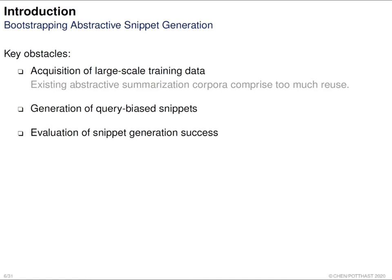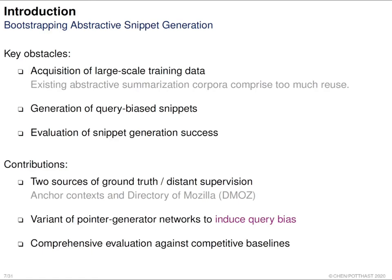There are some obstacles to solve in order to have an abstractive snippet generator. First, we need a sufficient number of training data. Second, we need to generate query-biased snippets. Finally, we need to evaluate whether our generated snippets are successful. In this paper, our contributions include: we develop two distant supervision resources — anchor context and DMOZ descriptions — to acquire training data; we develop variants of pointer generator networks to generate query-biased snippets; and we provide a comprehensive evaluation.